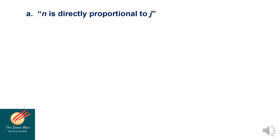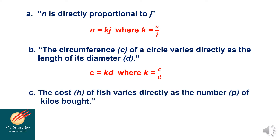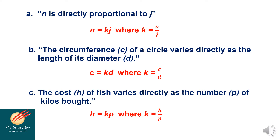Let's have the following examples. First, n is directly proportional to j. I can rewrite this as n is equal to k times j, where k is equal to n over j. Another example: the circumference of a circle varies directly as the length of its diameter d. In symbol, c is equal to k times d, where k is equal to c over d.